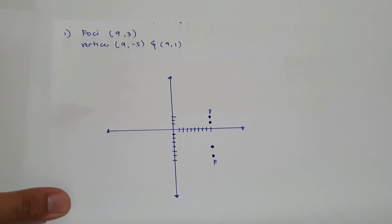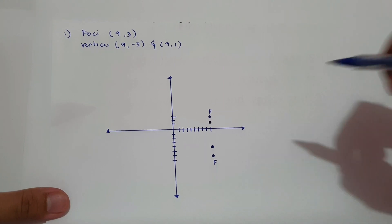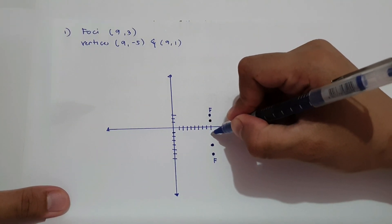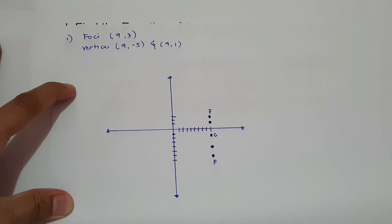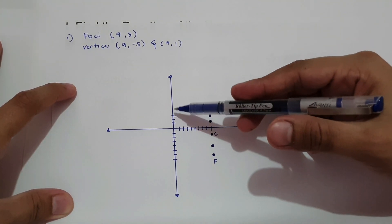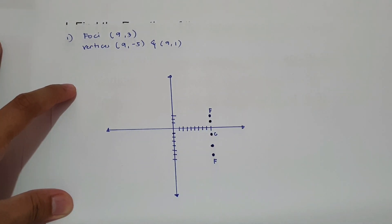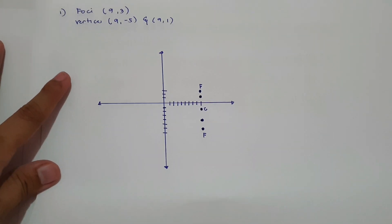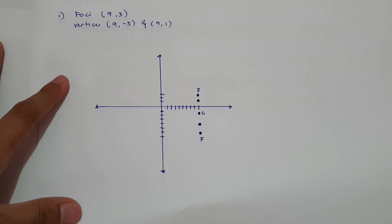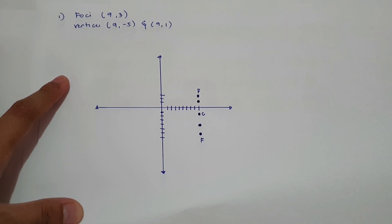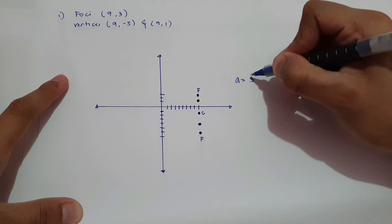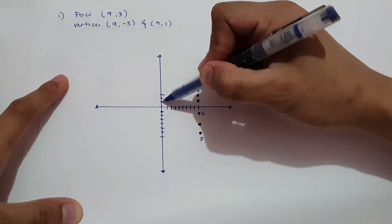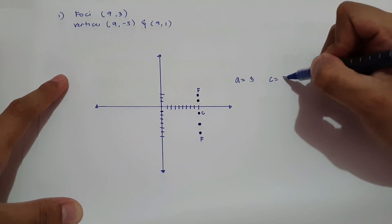Now, using this given, we can easily identify our center. Our center is located at (9, -2). Since we have foci that are vertically oriented with the y-axis, we can say that our graph opens upward and downward. Let us determine the distance from center to vertices and from center to foci. So our a, the distance from center to vertices, is 3 units. And c is 5 units.